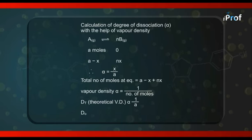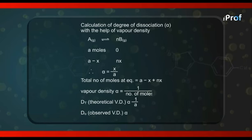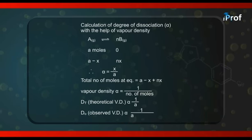And similarly, DO, that is the observed vapor density, whose value is bound to be less than DT, that will be proportional to 1 upon A minus X plus NX. Dividing these two expressions,